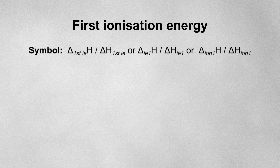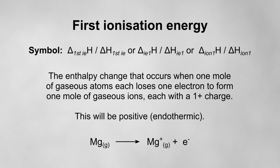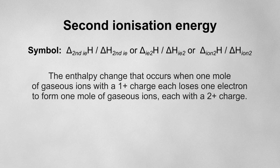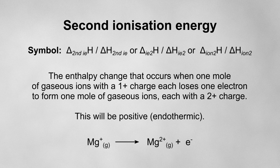The first ionization energy is the enthalpy change that occurs when one mole of gaseous atoms each loses one electron to form one mole of gaseous ions each with a 1+ charge. For example, this equation shows the first ionization energy for magnesium. It will always be positive because it requires energy to pull an electron away from an atom, so it's endothermic. The second ionization energy is the enthalpy change when one mole of gaseous 1+ ions each loses one electron to form one mole of gaseous 2+ ions. It will always be more positive than the first, because even more energy is required to pull a negative electron away from an already positively charged ion.